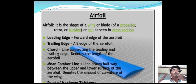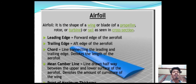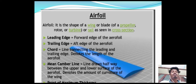An airfoil is the shape of a wing, blade, propeller, rotor, turbine, or sail as seen in cross section. An airfoil has a leading edge — the forward edge — a trailing edge — the after edge — and a chord line connecting the leading edge to the trailing edge, which denotes the length of the airfoil. The mean camber line is drawn halfway between the upper and lower surfaces and denotes the amount of curvature of the wing.